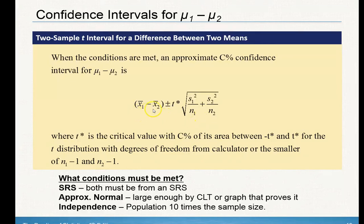What I want you to notice here is we don't have a single value — we're subtracting the two means. Those are the two means from each of the samples, then your critical t, and your standard error is basically going to be your standard deviation of your statistic. If you notice, we are adding the two variances — it's very important that you do that — and then you take the square root.